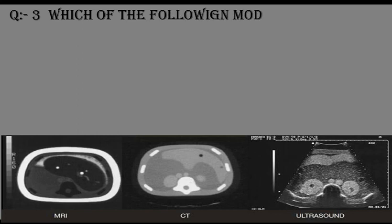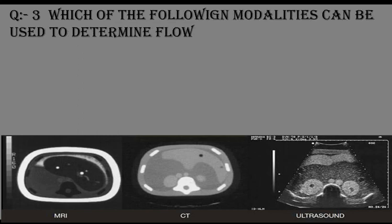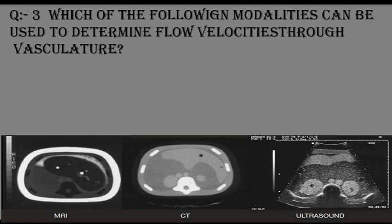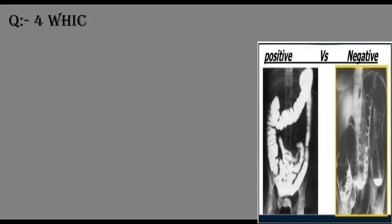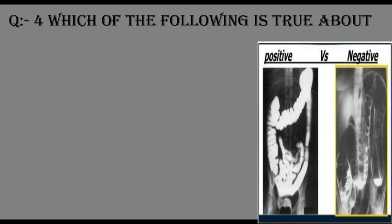Question number three: which of the following modalities can be used to determine flow velocities through vasculature? Number one: MRI. Number two: ultrasound. Number three: spiral CT. Number four: teleradiology.